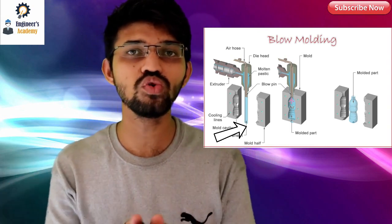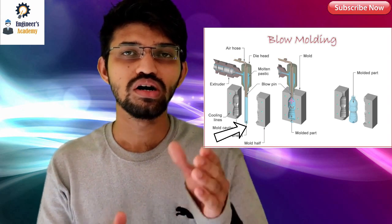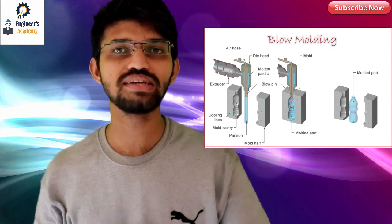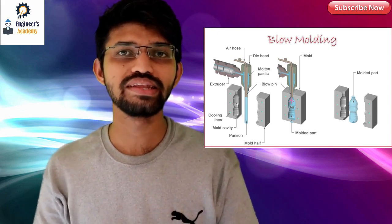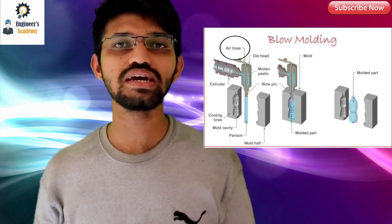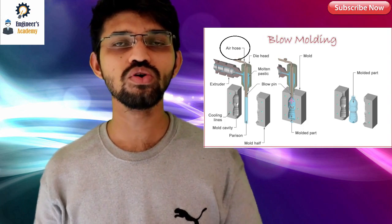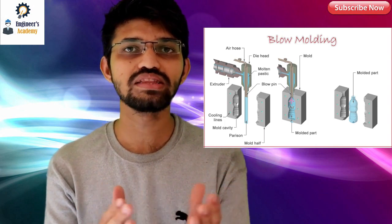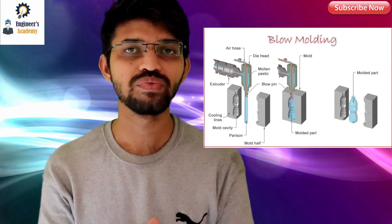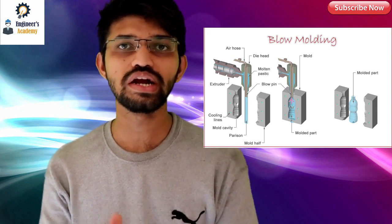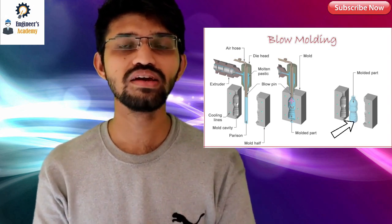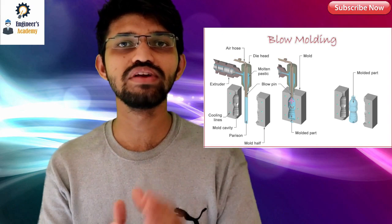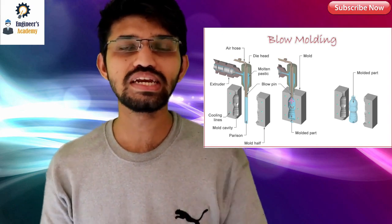This parison is then placed vertically between two mold walls which have a mold cavity. Compressed air is then allowed to flow through the parison, causing it to inflate and take the shape of the mold cavity. After solidification, the ejector pins open the two mold walls and we get our final product — the plastic bottle.